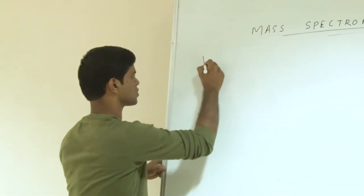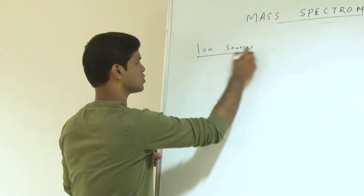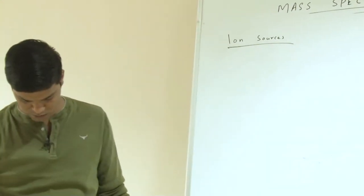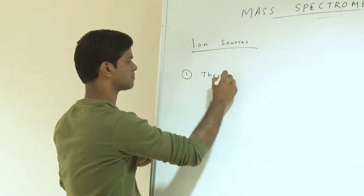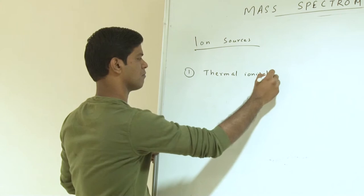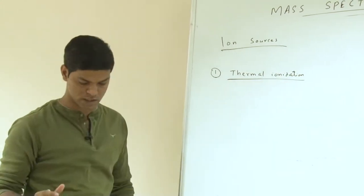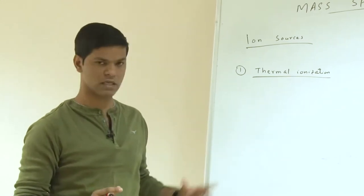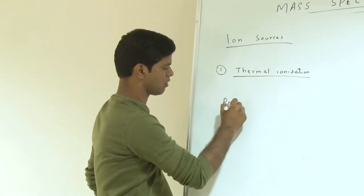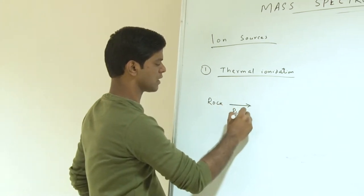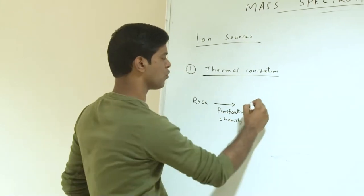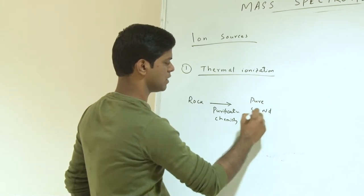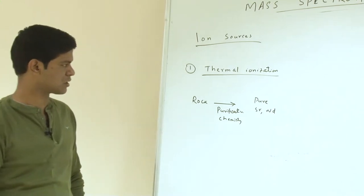Let us discuss the different components of the mass spectrometer. The first one is ion sources. There are various kinds of ion sources available for different kinds of mass spectrometers, and the most frequently used one is thermal ionization mass spectrometry (TIMS). In thermal ionization, you take a solid source - you take your sample, let us say a rock, do the purification chemistry and extract the pure form of the element, let it be strontium or neodymium. These are some of the frequently used isotopes for thermal ionization mass spectrometry.